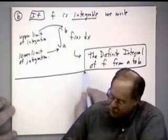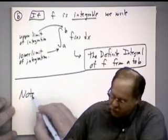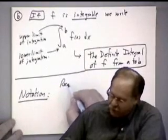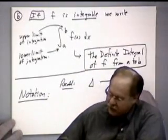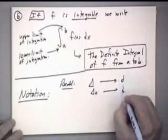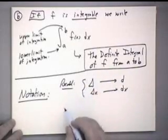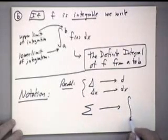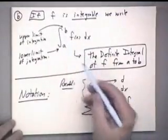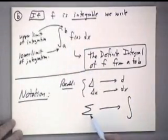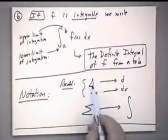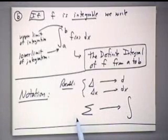One more thing to note: there is a notational plan you may have caught on to. For derivatives, delta x became dx. Here, we have the Greek sigma — which represents sum — becoming the long skinny s, which is the integral sign. So the Greek s becomes the English s, in the same way the Greek delta became the English d. Now we'll go on and see some properties of this new object.